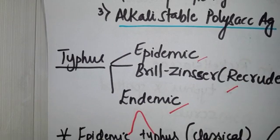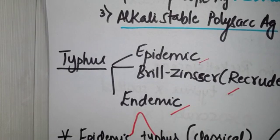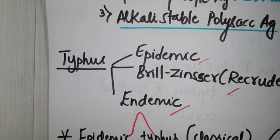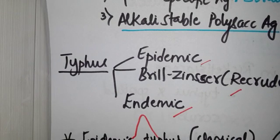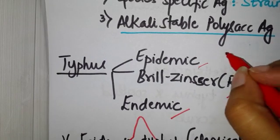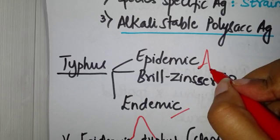Now next, let's go to endemic typhus. The word endemic actually means it's widespread, it's there everywhere. So how do you remember that epidemic is louse? Epidemic and Brill-Zinsser are kind of related. So now you have to differentiate between epidemic and endemic.